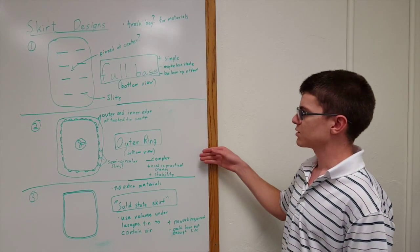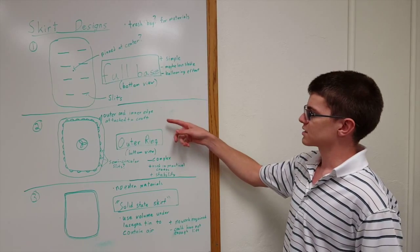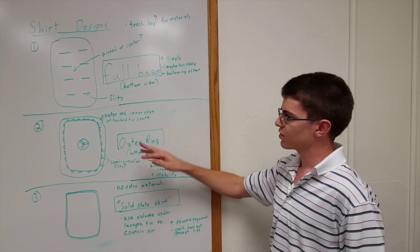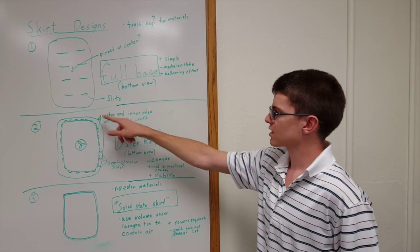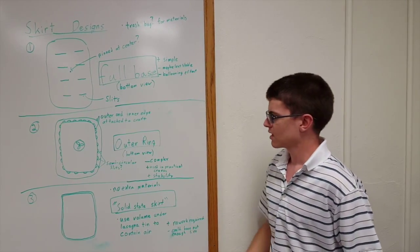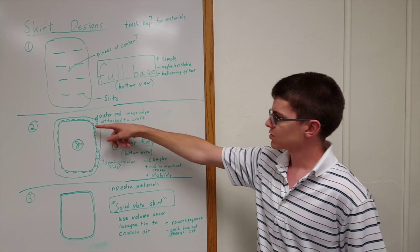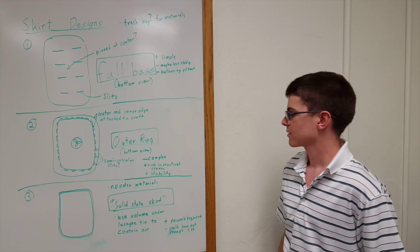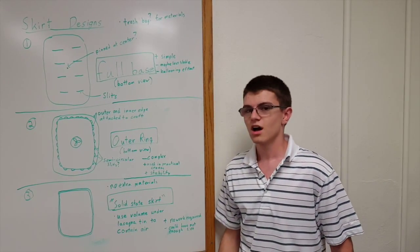The second design we decided on was the outer ring design, in which the trash bag material would be attached around the inner and outer edges of the perimeter of the bottom of the craft. With this design we would have semi-circular slits all along the inner edge of the trash bag.